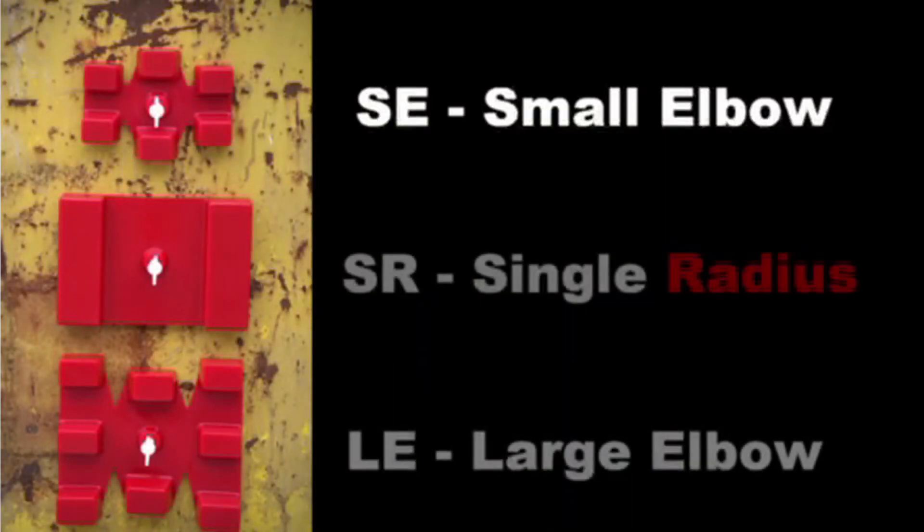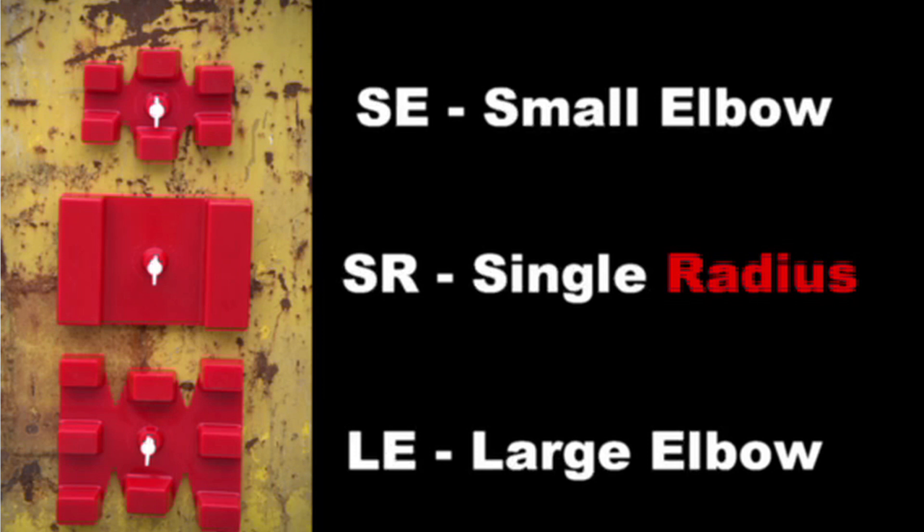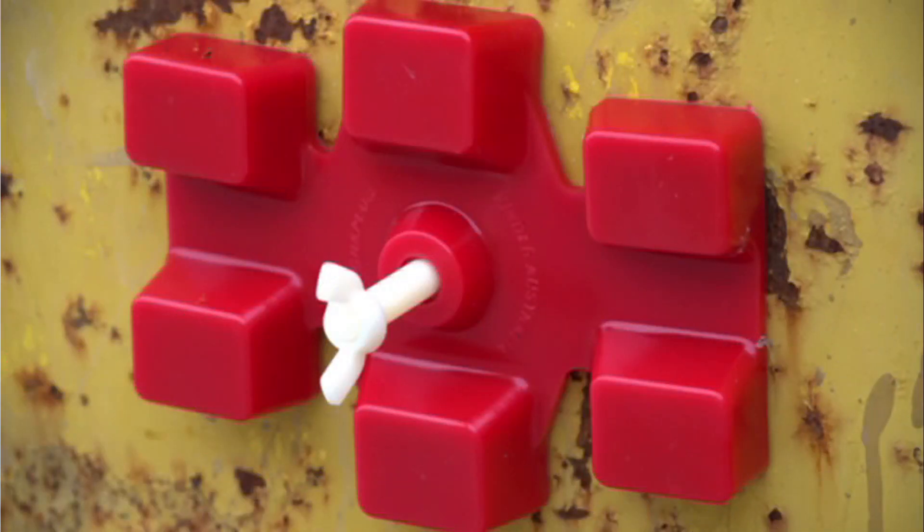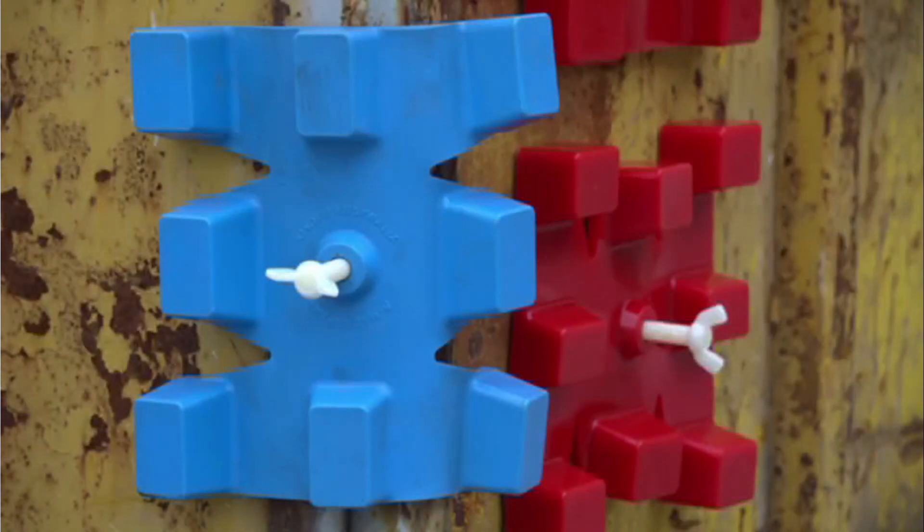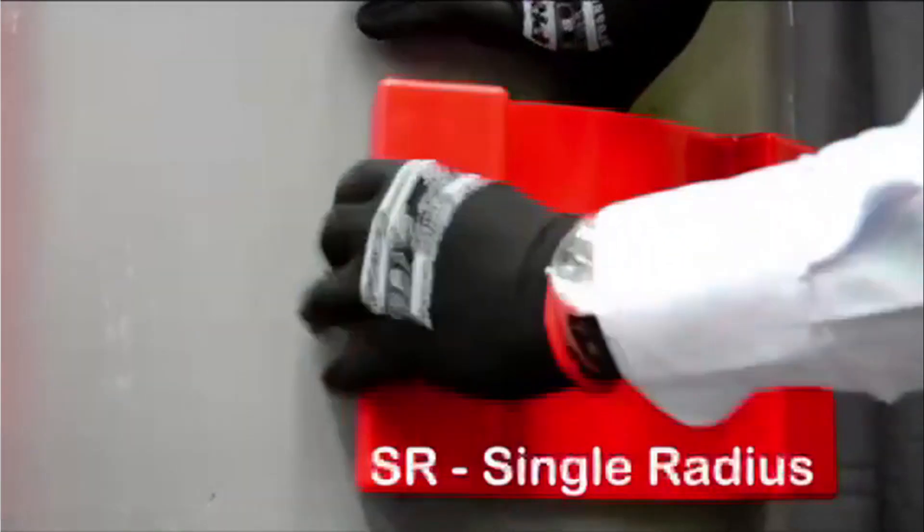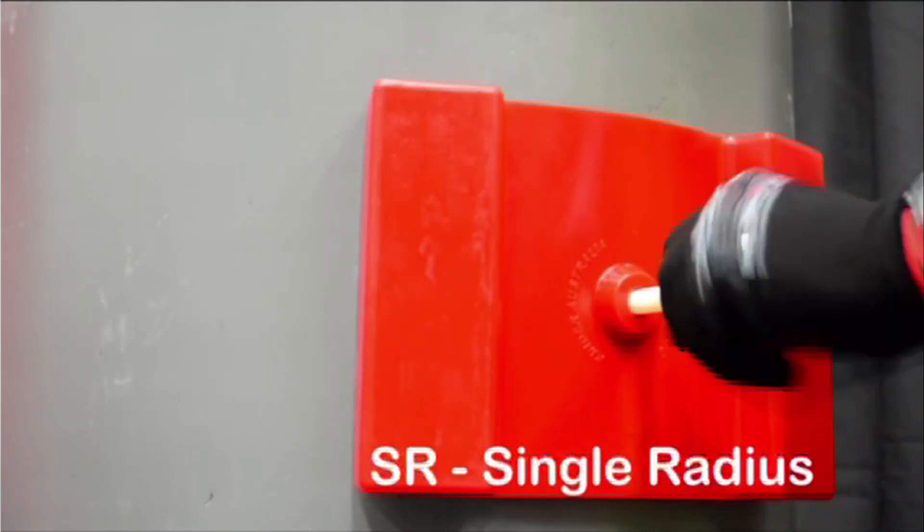Available in three sizes: small elbow, large elbow and single radius. The small and large elbow are suited to flat or curved surfaces with the small elbow suitable for pipes 76mm diameter or larger. The single radius size is more suited to flat surfaces with less curvature such as chutes and hoppers.